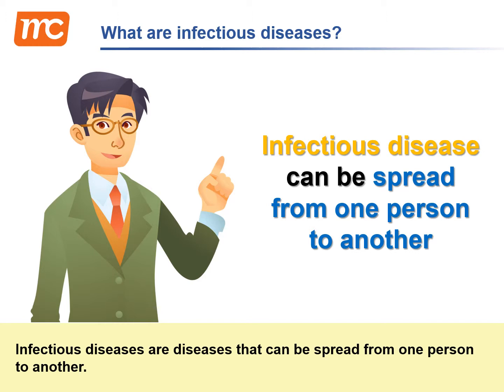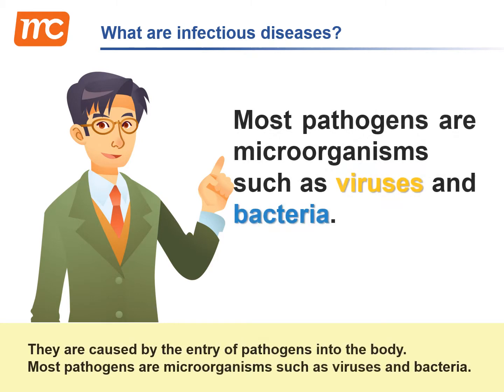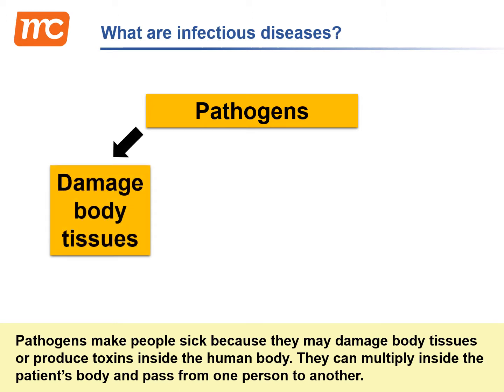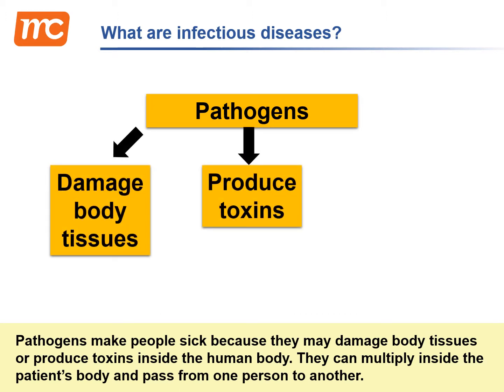Infectious diseases are diseases that can be spread from one person to another. They are caused by the entry of pathogens into the body. Most pathogens are microorganisms such as viruses and bacteria. Pathogens make people sick because they may damage body tissues or produce toxins inside the human body.